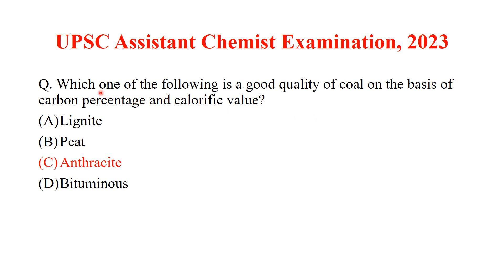The next question is: which of the following is a good quality coal on the basis of carbon percentage and calorific value? As discussed in the first question, cellulose or wood will ultimately be converted into anthracite, which is the highest rank coal available. So the answer is anthracite.